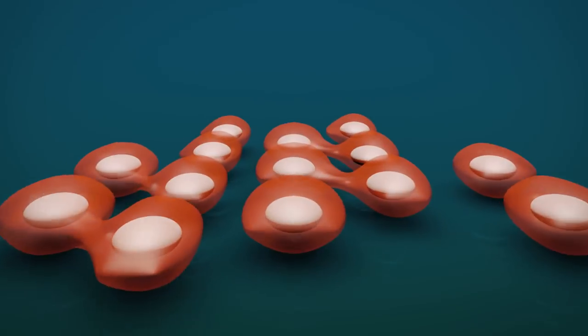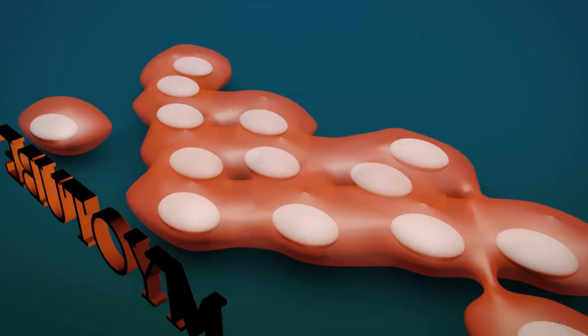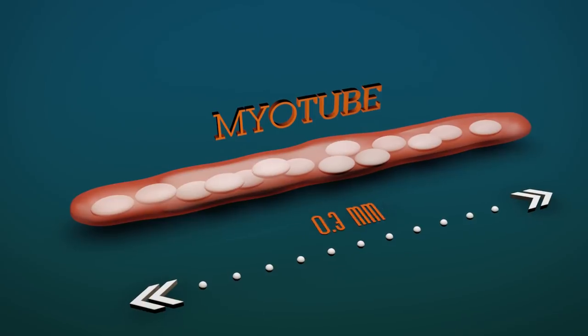These cells naturally merge to form so-called myotubes, which are no longer than 0.3 mm.